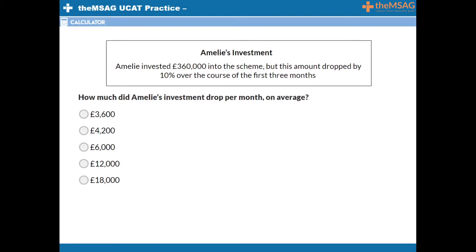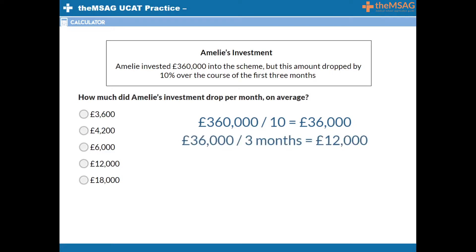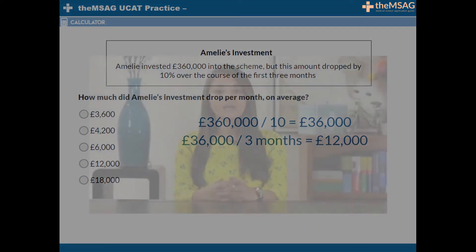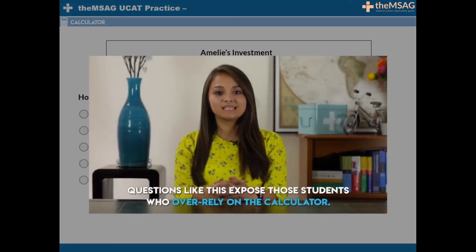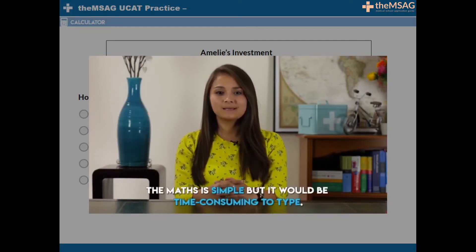You should confidently be able to say that 10% of 360,000 pounds is 36,000 pounds. If this is the drop over three months, we can mentally calculate by dividing by 3 that the loss per month was 12,000 pounds on average — all in about five seconds. Questions like this expose those students who over-rely on the calculator. The math is simple but it would be time-consuming to type.